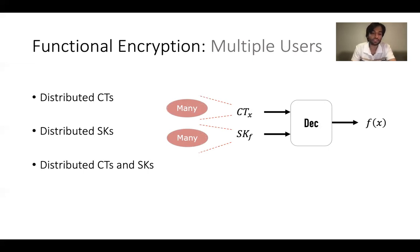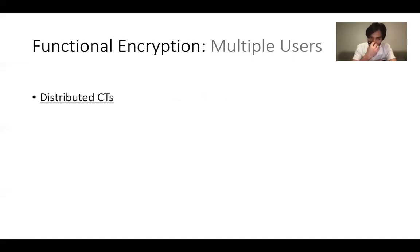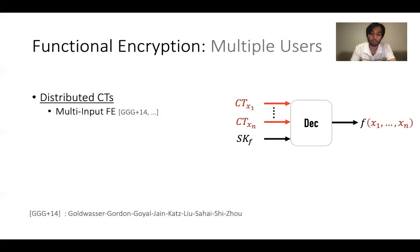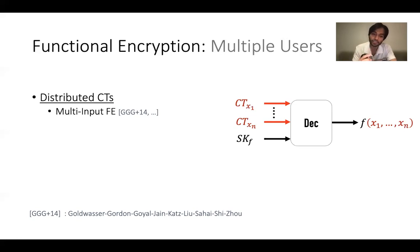It turns out this goes beyond the abstraction of regular single-party functional encryption, and numerous generalizations have been proposed. The earliest work was by Goldwasser, who proposed multi-input function encryption, in the domain of multiple data sources, where ciphertexts can be computed for different independently chosen message values x1 through xn, and decryption can combine multiple ciphertexts given a single secret key to learn f of x1 through xn.